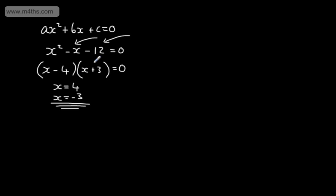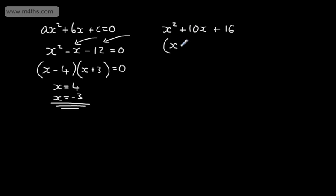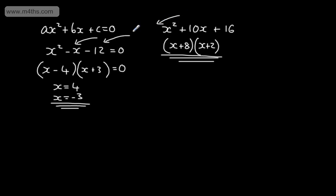Sometimes we'll simply be asked to factor an expression. For example, if the quadratic expression was X squared plus 10X plus 16, this is an expression — it becomes an equation if we have the equal sign. So this one is going to factor as X plus 8 and X plus 2. Over time, you will spot this and start to recognize that it's fairly straightforward to do. That was when the coefficient of the term in X squared, or the value of A, was equal to 1.